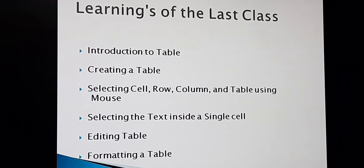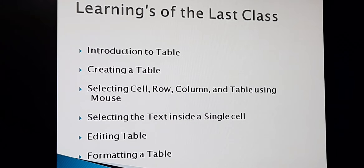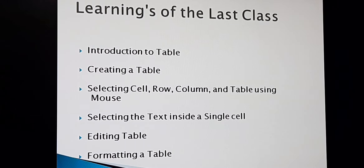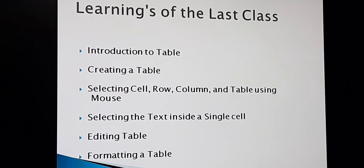How to select the cell, row, column and table with the mouse. Then selecting the text inside a cell. Then editing a table — how to make changes on the table. And last we did formatting a table: how to change the different style and shading. Only the introductory part we did of formatting a table. So today we proceed with formatting a table.